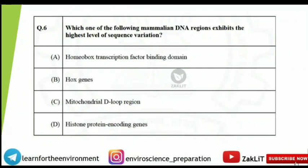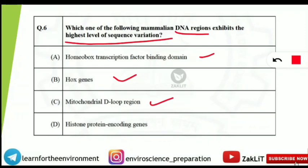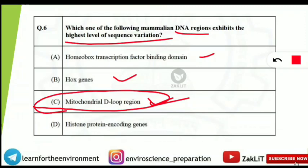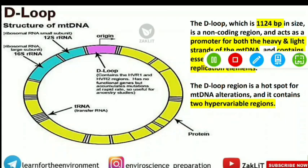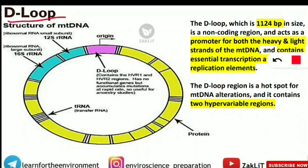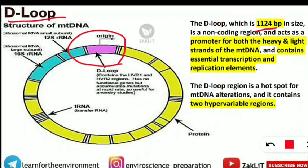The next question asks: which one of the following mammalian DNA regions exhibits the highest level of sequence variation? The options are homeobox transcription factor binding domain, Hox genes, mitochondrial D-loop region, or histone protein encoding genes. The correct option is C: the mitochondrial D-loop region has the highest level of sequence variation in mammals. This is the D-loop found in the mitochondrial DNA structure.